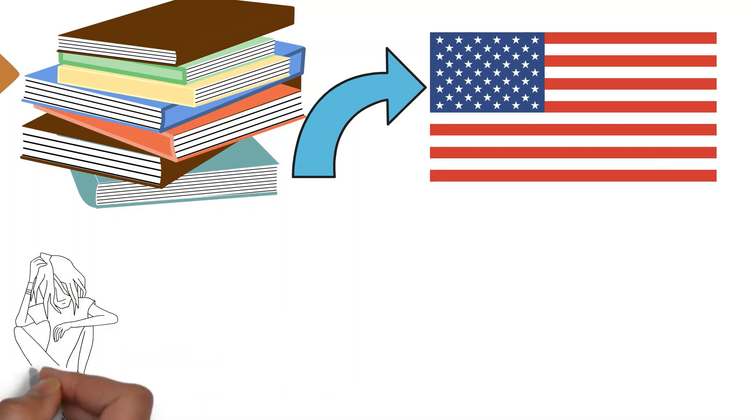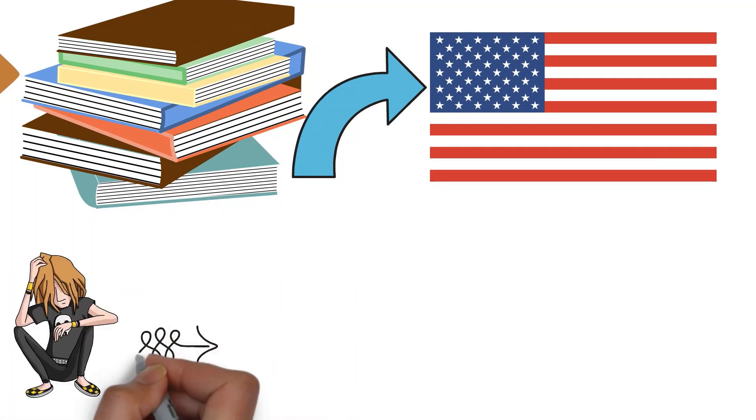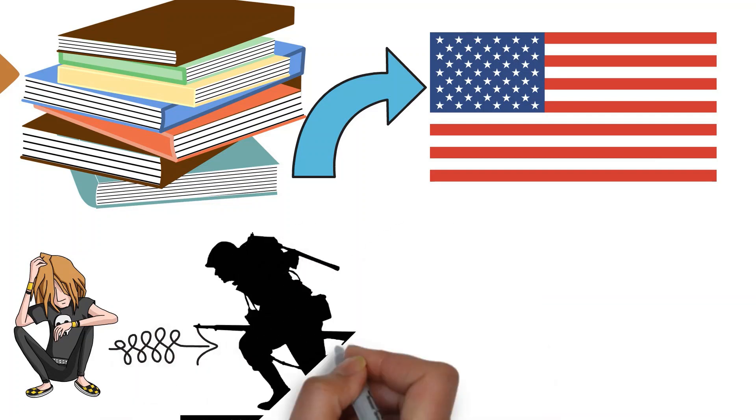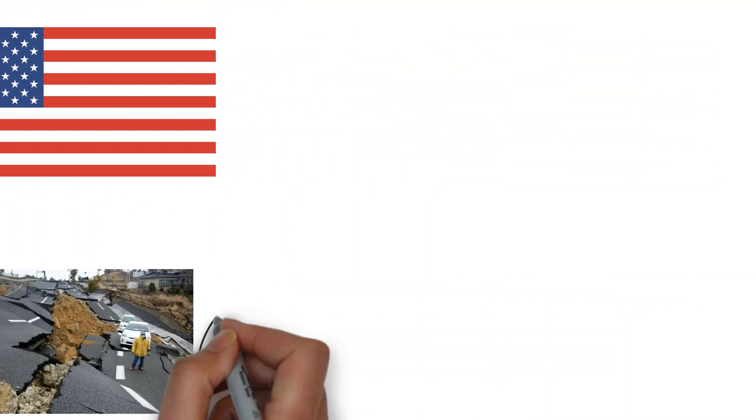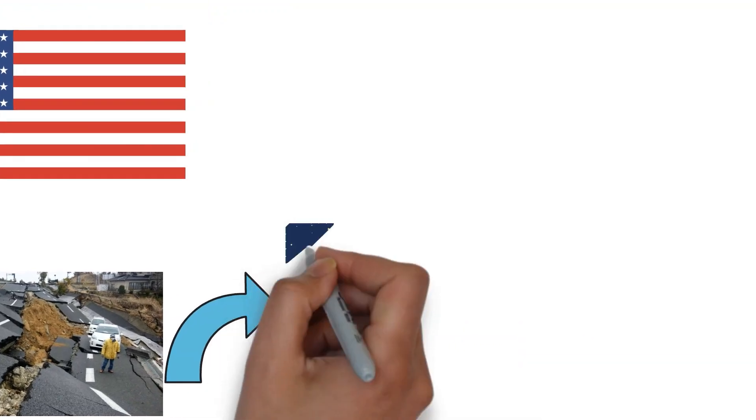Conspiracy theories increase in prevalence in periods of widespread anxiety, uncertainty, or hardship, such as during wars and economic depressions, and in the aftermath of natural disasters like tsunamis, earthquakes, and pandemics.